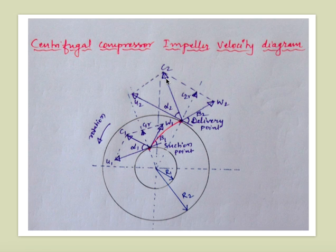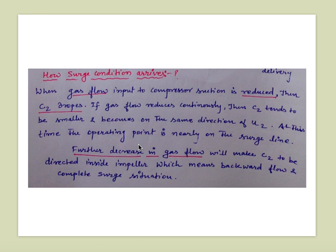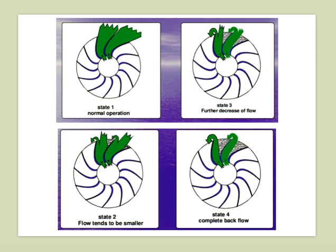If we further reduce gas flow to the compressor suction continuously, c2 tends to become smaller and align in the same direction as u2. The magnitude of the c2 vector keeps reducing — initially it is large, then progressively shorter. At a certain point, drawing the parallelogram shows the resultant c2 becomes almost parallel to u2. This is the initiation of surge condition, and at this moment the operating point is nearly on the surge line. Further decrease in gas flow will cause c2 to be directed inside the impeller, meaning backward flow — complete surge situation.